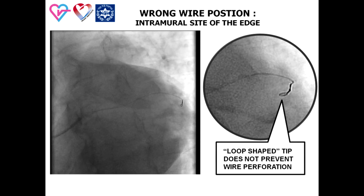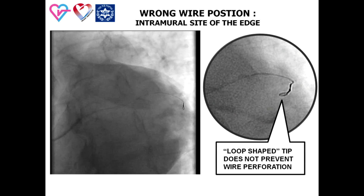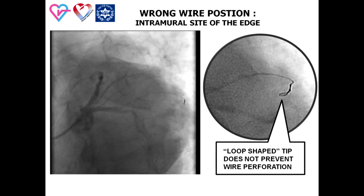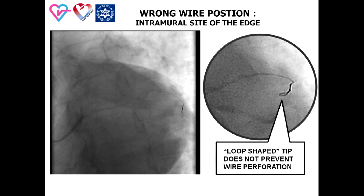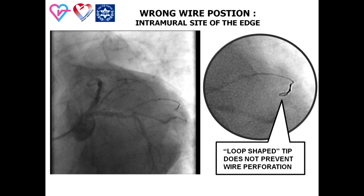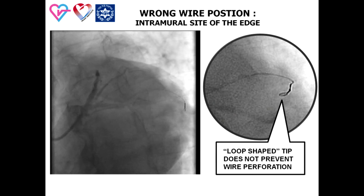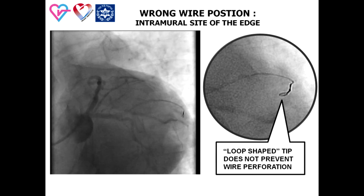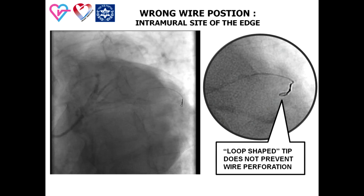A loop or lasso shape guide wire tip does not prevent coronary perforation — in fact, this shape augments the penetration power of the wire.